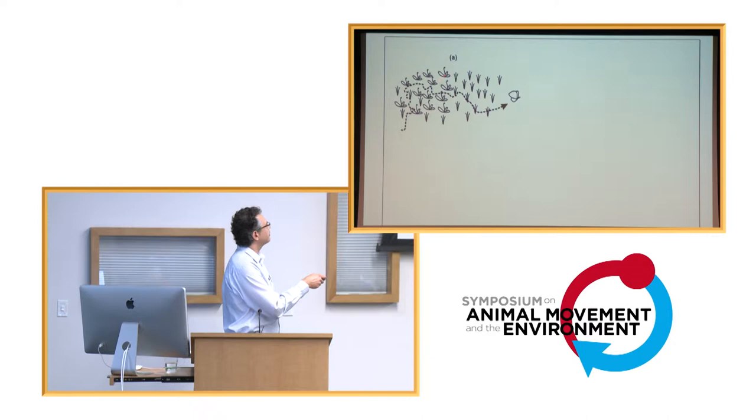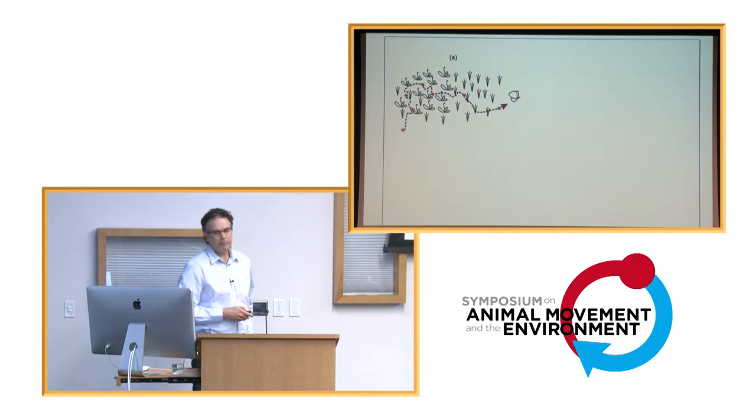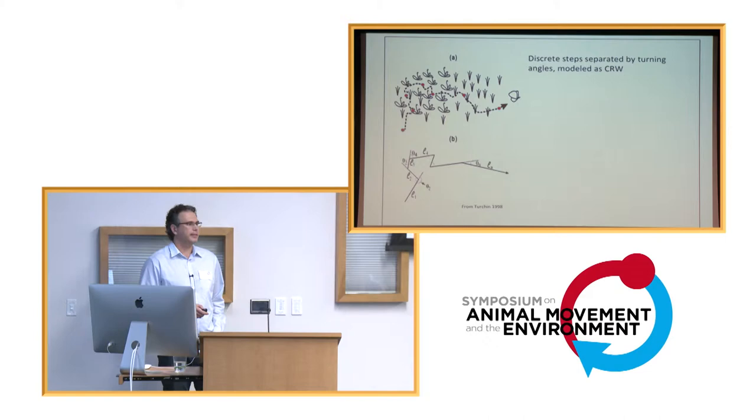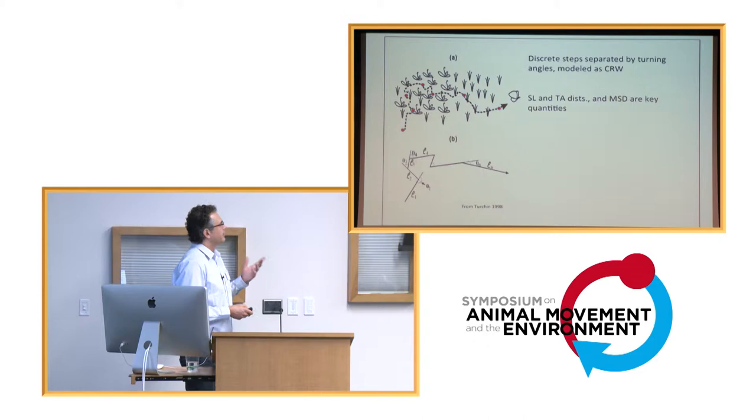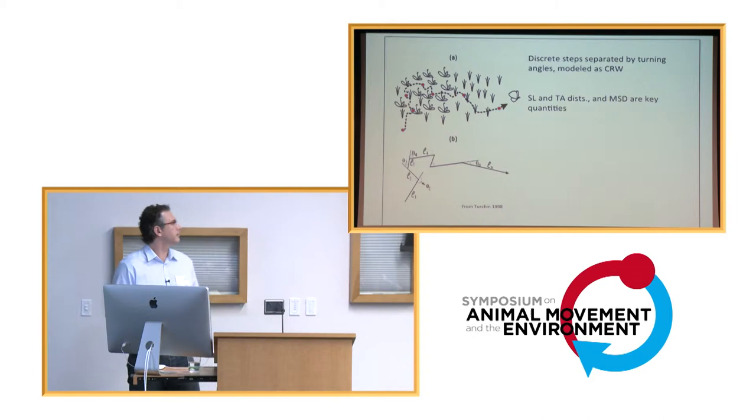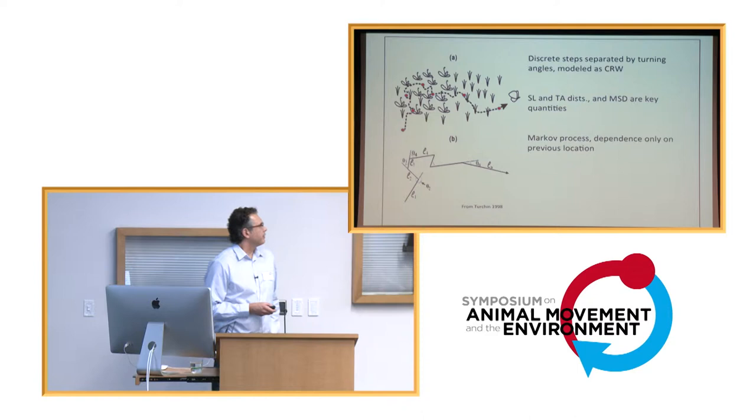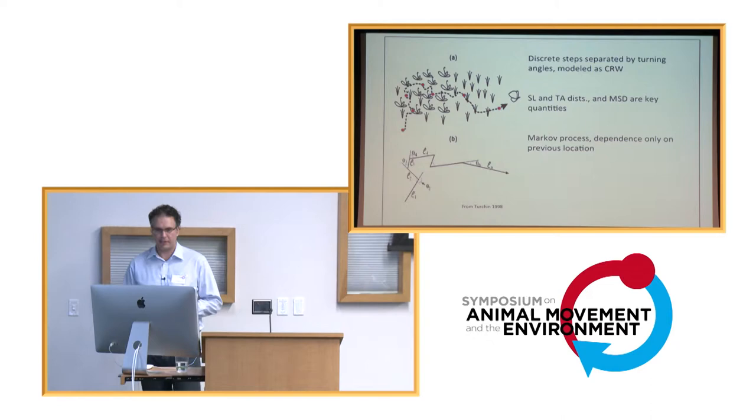The idea is your critter traces some continuous path through the environment. You happen to sample the path at discrete points in time. And then you discretize the path by connecting the dots and working out the step lengths and turn angles that result. And you model that as a discrete step random walk or correlated random walk model. In that framework, the step length and turn angle distributions and things like the mean squared displacement are the key quantities of interest. Those are Markov chain models, so you have only dependence on the previous location or previous step in the process.